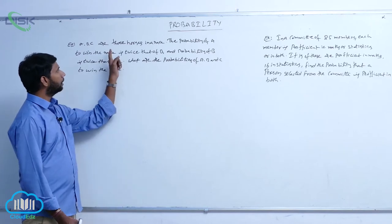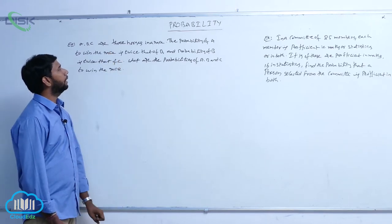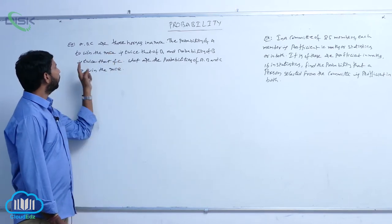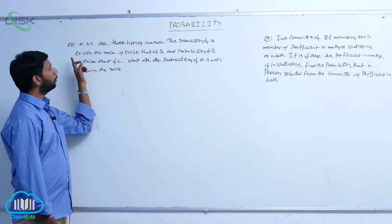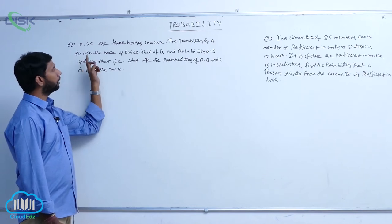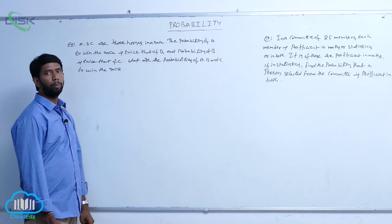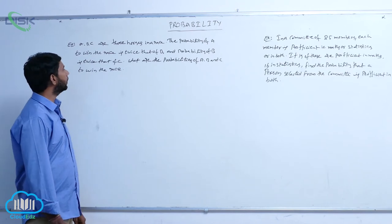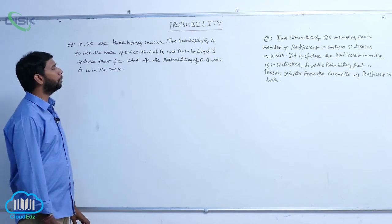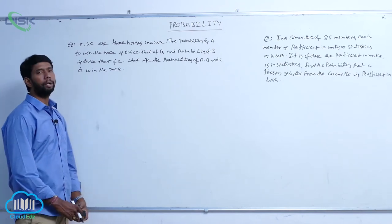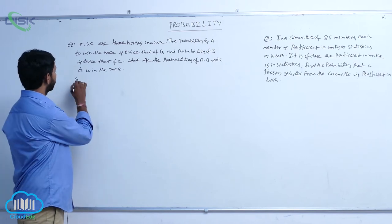A, B, C are the three horses in a race. The probability of A to win the race is twice the probability of B, and the probability of B is twice the probability of C. What are the probabilities of A, B, C to win the race?